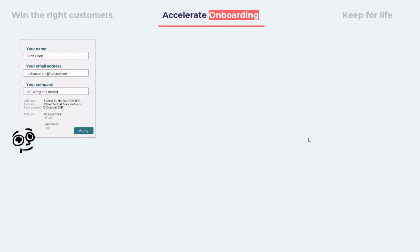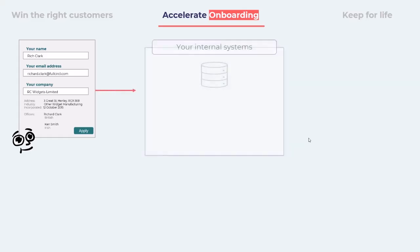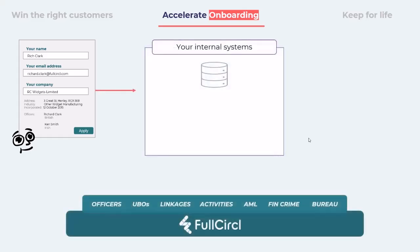Onboarding begins at the point that your business customers apply for your services, whether through your digital channels, at a branch, from a broker, and so on. But wherever they come from, they pop into your internal systems, ready to progress swiftly through your onboarding checks. And this is where the Full Circle API comes in.